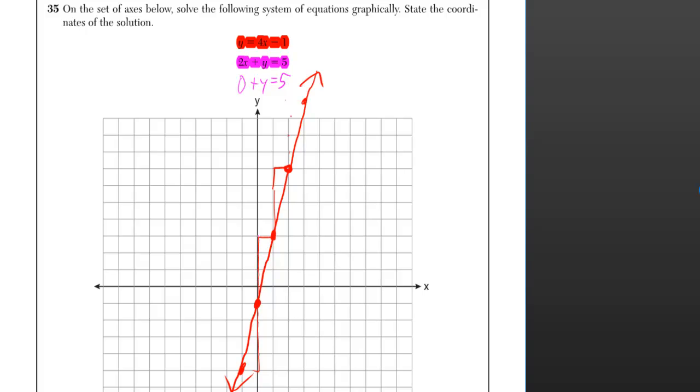So I got to go up 1, 2, 3, 4, 5 and that gives me the point 0 comma 5.